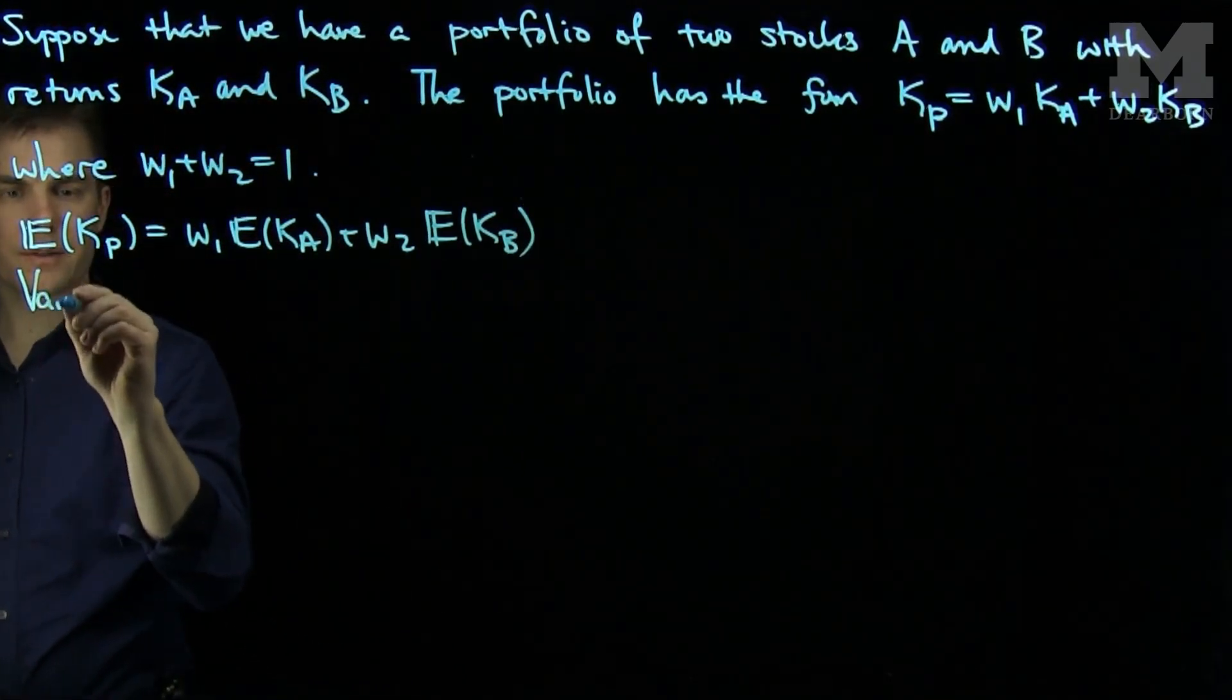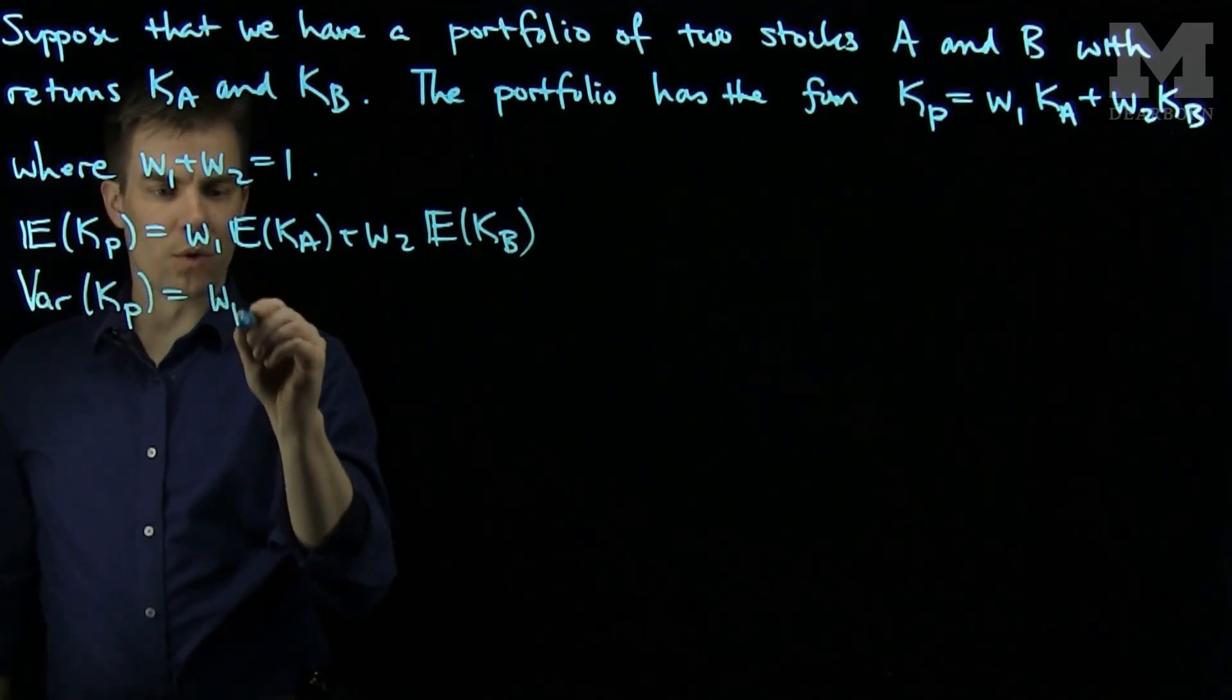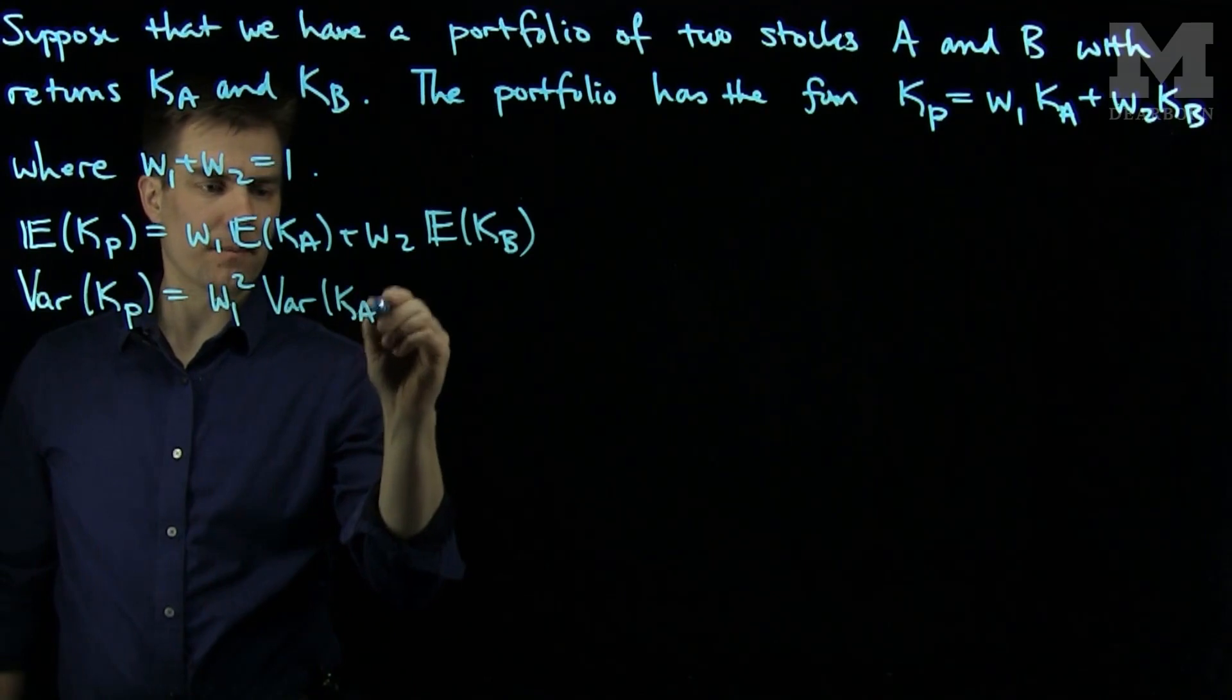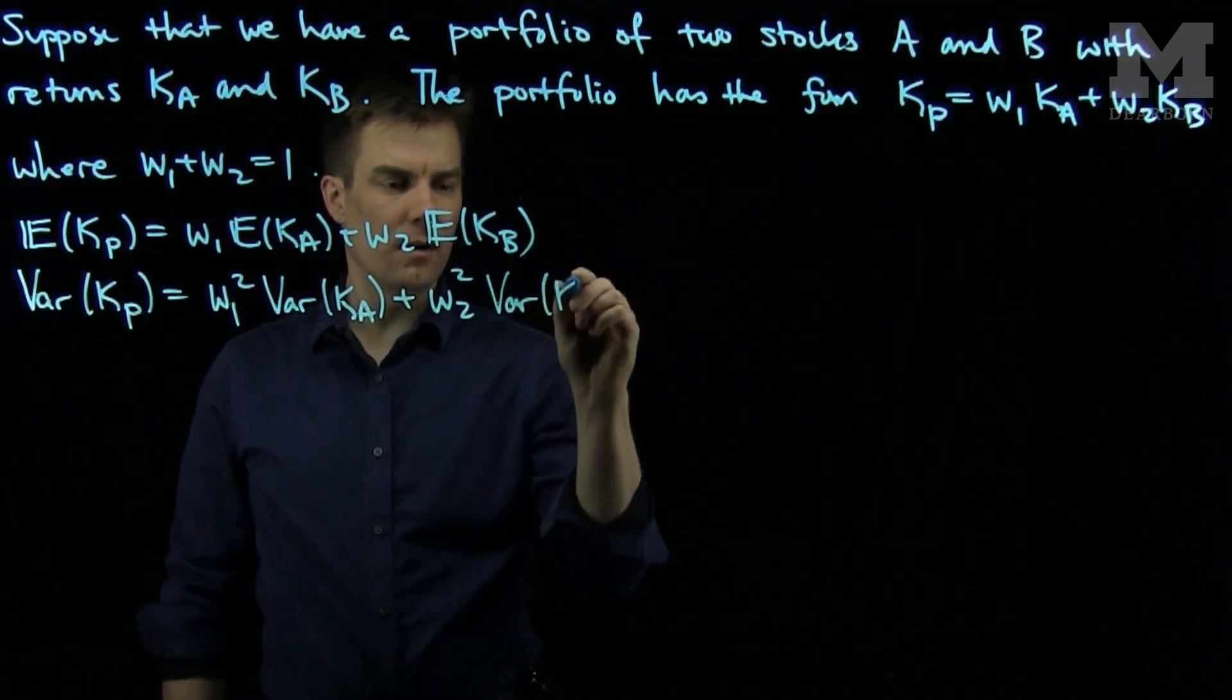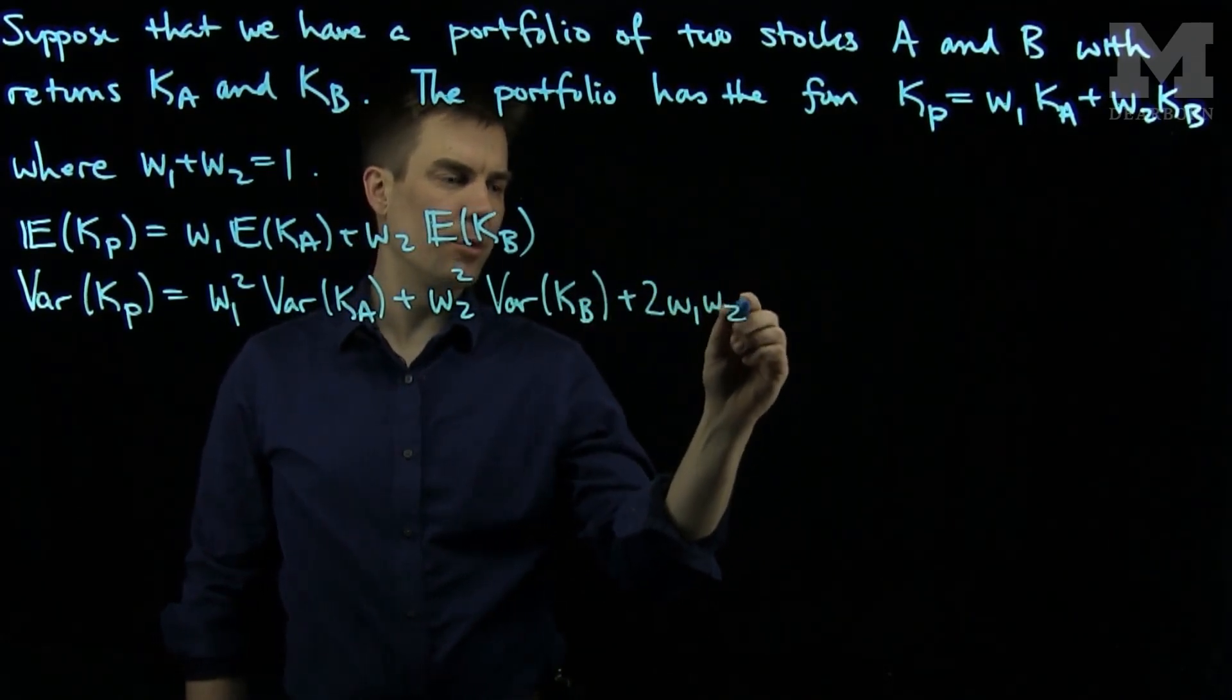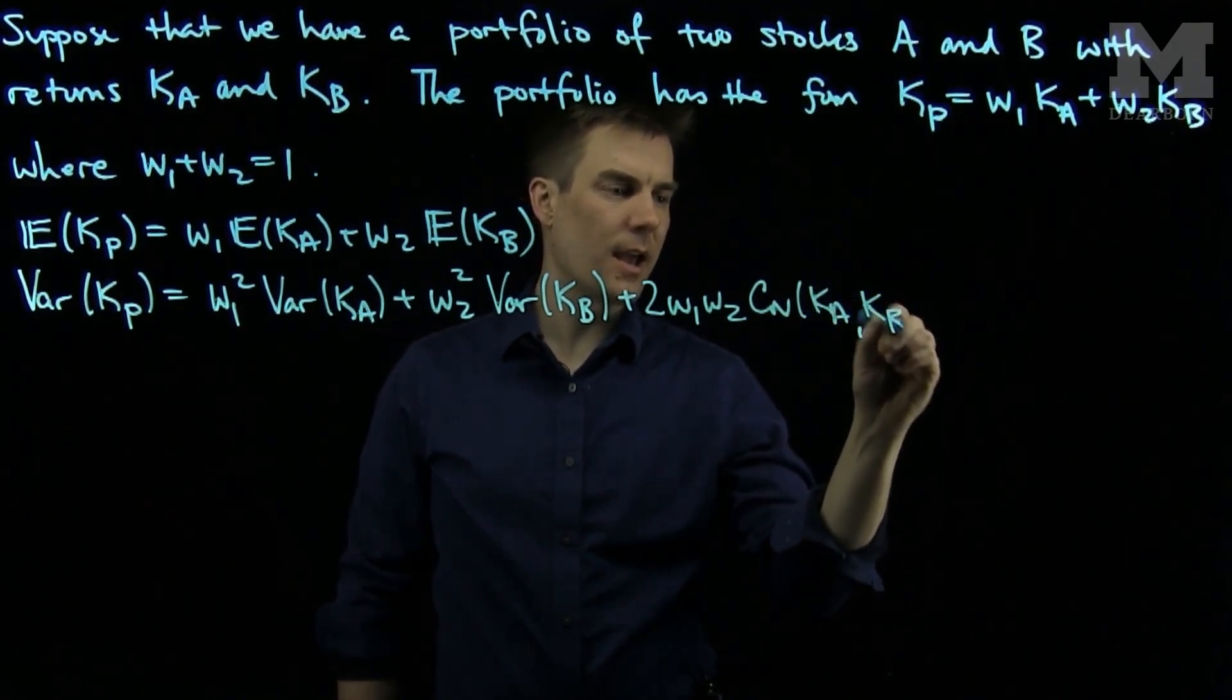Now I'll find the variance. The variance is a quadratic functional. It will be W1 squared, the variance of Ka, plus W2 squared, the variance of Kb, plus twice W1, W2, the covariance of Ka and Kb.